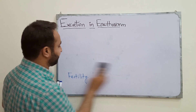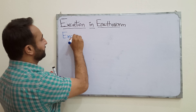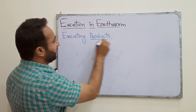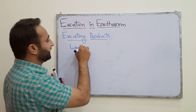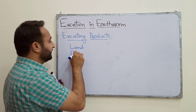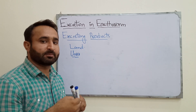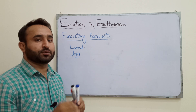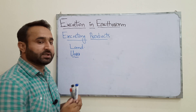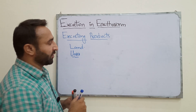Next, what are the excretory products in the earthworm? Since earthworm lives on land, water availability is less. Due to less water availability, the nitrogenous waste in the earthworm is urea. In animals where water availability is less, ammonia is converted into urea, as urea needs less water to be removed from the body. Along with urea, some extra water and solutes are also removed as excretory products.